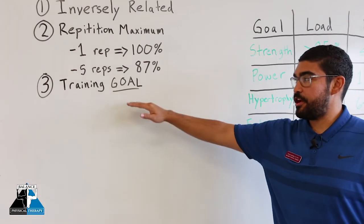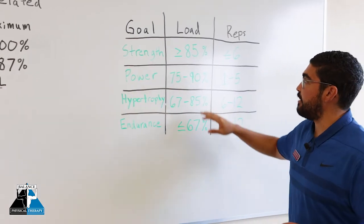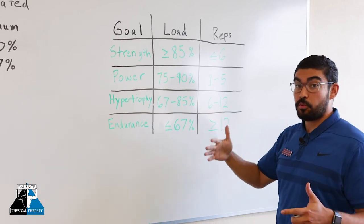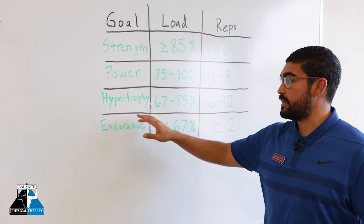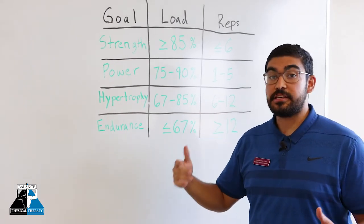Let's look at our training goals. If our goal is to improve our strength, it's going to have different load and repetition maximums that we're going to be working through. Maybe our goal is power, and maybe our goal is hypertrophy or endurance. Let's take a look at these individually.